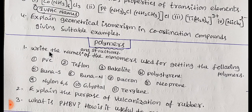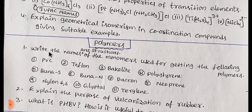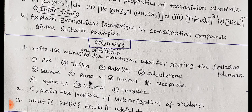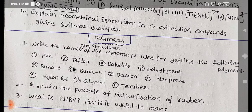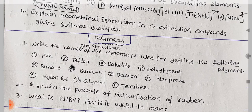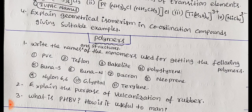Next, polymers — there are 3 questions. First, second, and third. One of them is the purpose of vulcanization of rubber. Another is: what is PHBV and how is it useful to man? So if you prepare these, you will score your 4 marks.